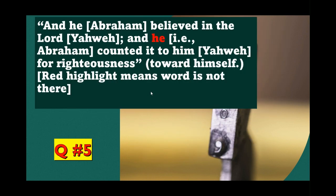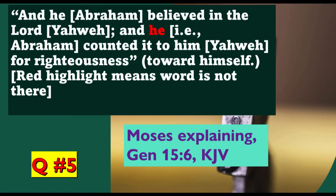Question five: Who said this? 'And Abraham believed in the Lord Yahweh, and he — that is Abraham — counted it to him, meaning Yahweh, for righteousness toward himself.' So Abraham is believing God; Yahweh has acted righteously toward himself. The red highlight means the word is not there in the original. Was this Jesus, Paul, or Yahweh? The answer is Moses explaining Genesis 15 in the KJV.